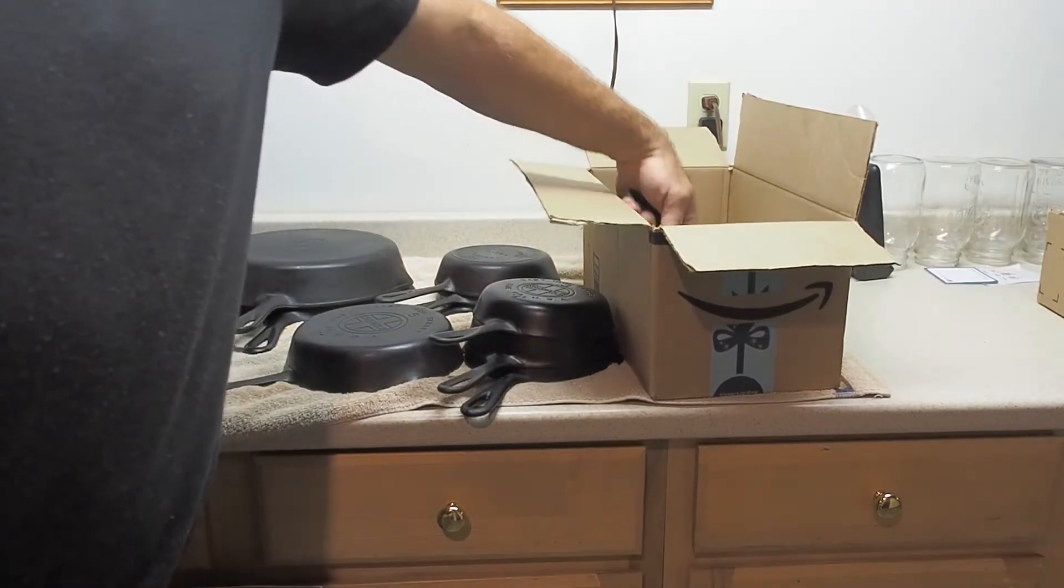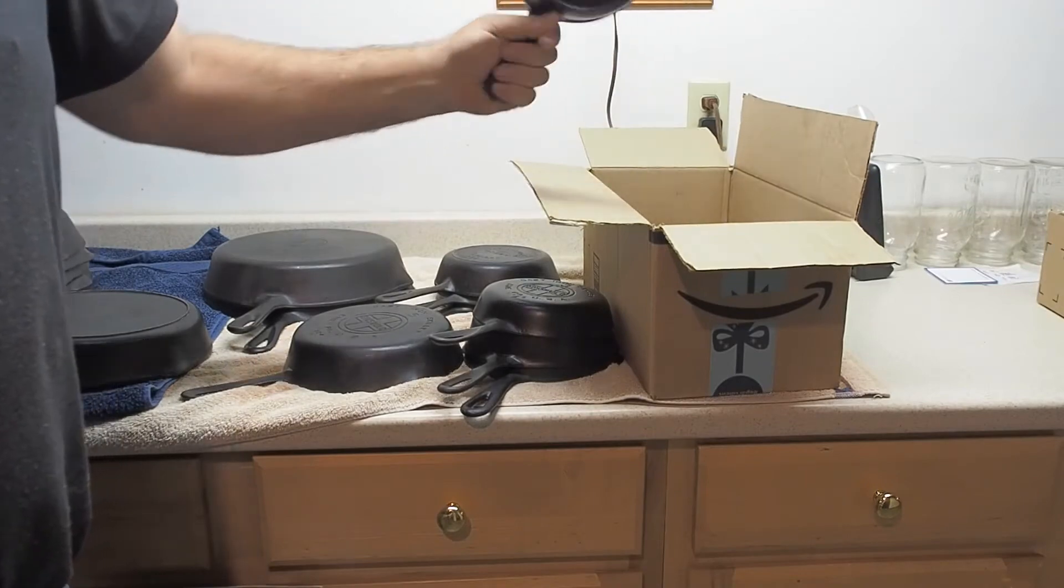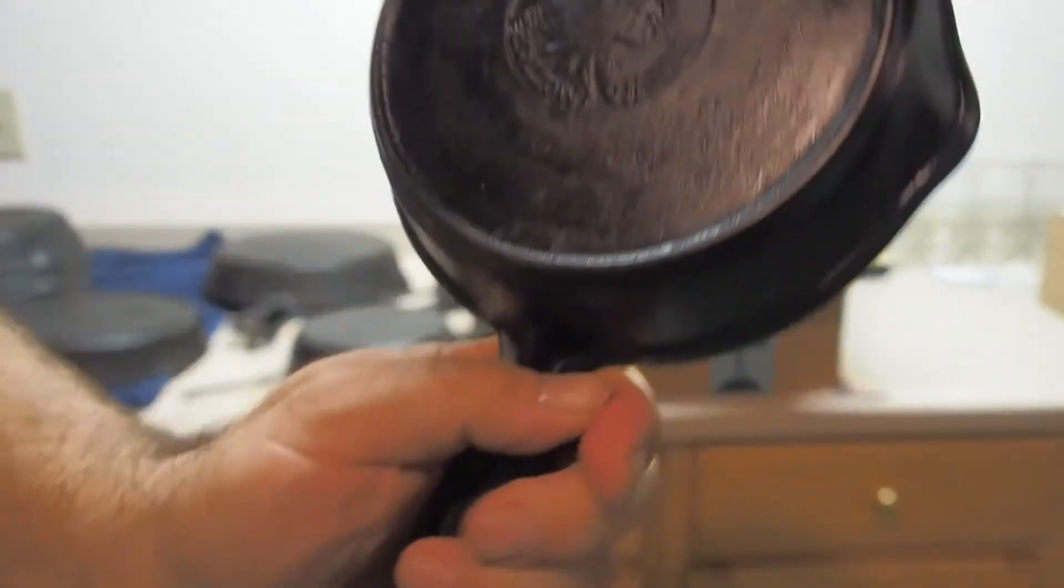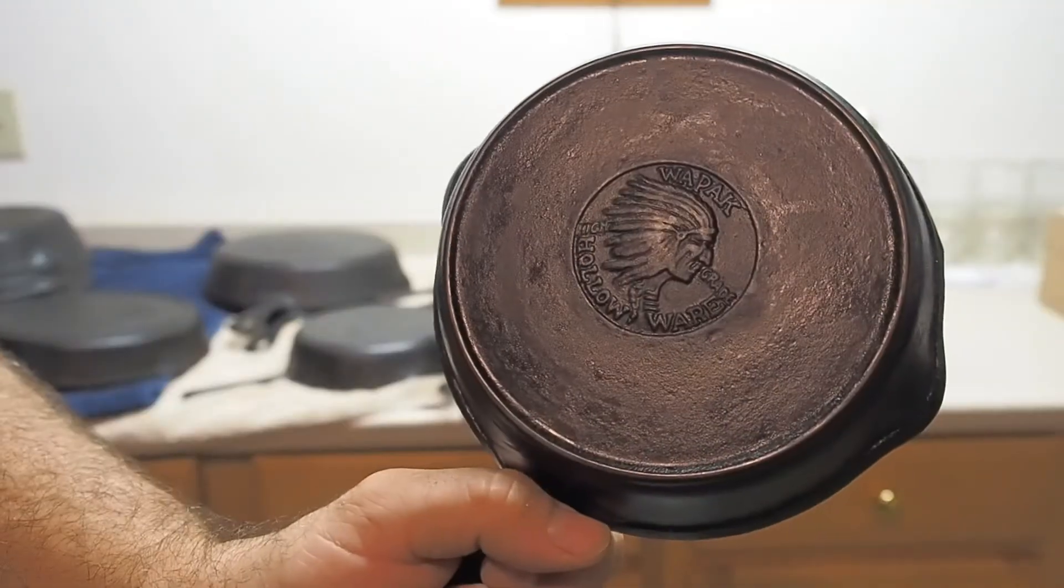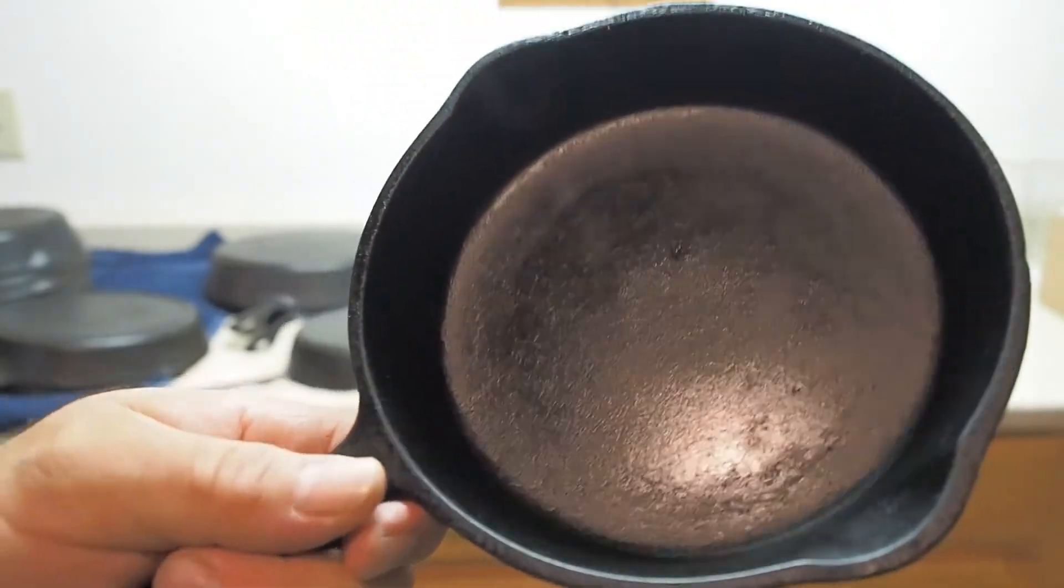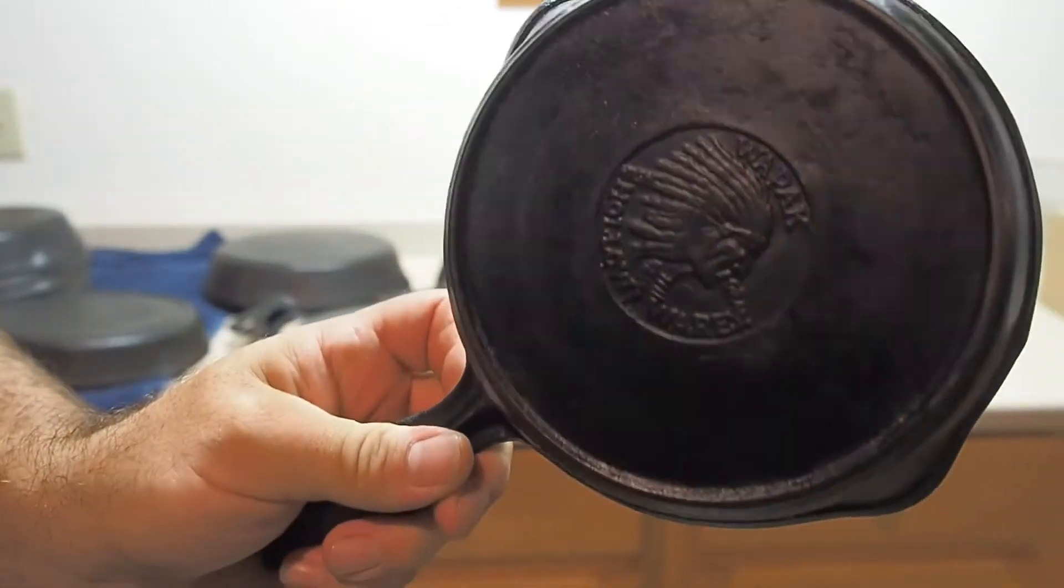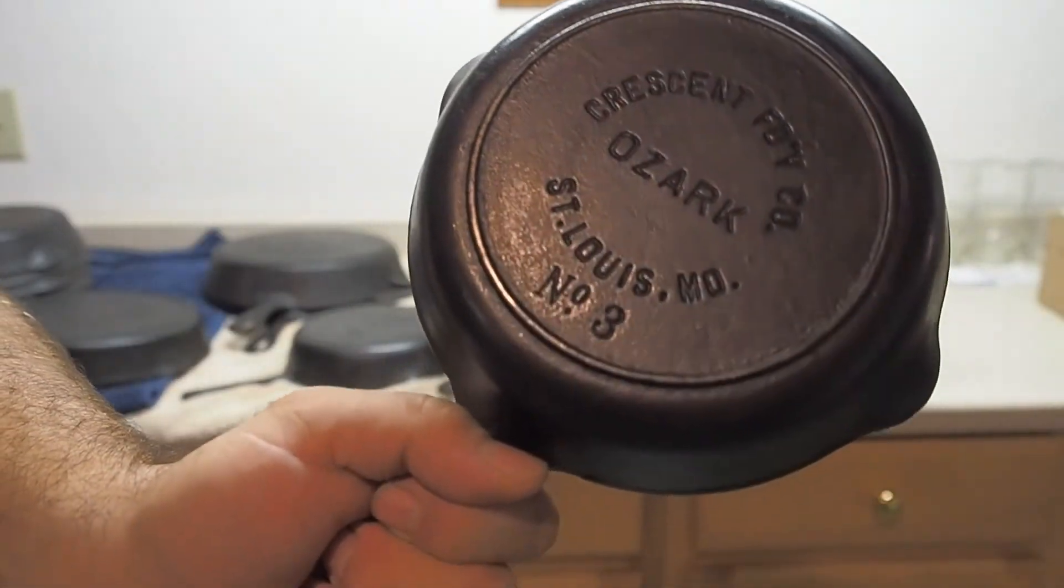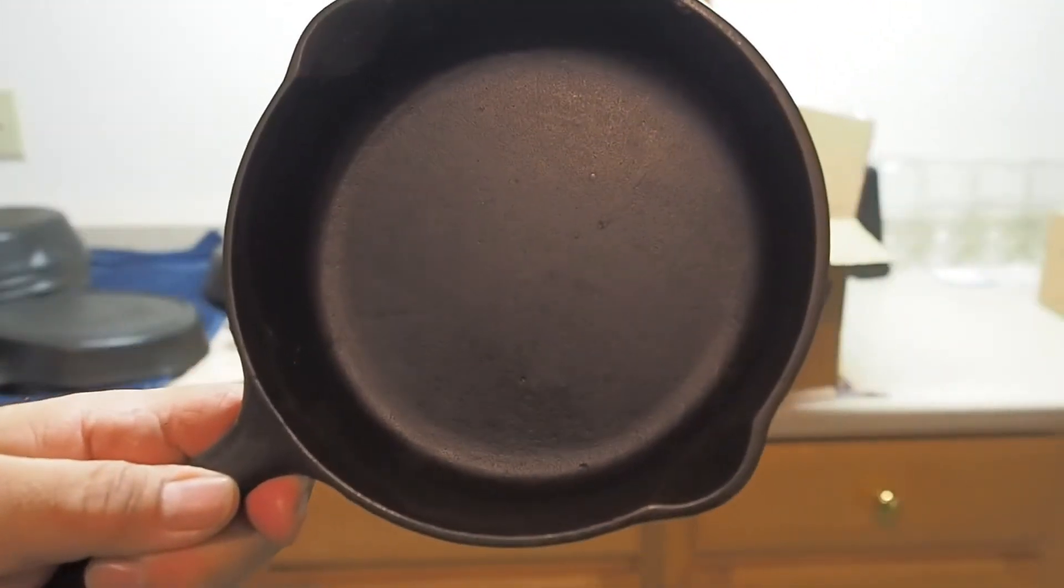Here's a neat piece. Number three, Wapak Indian Head logo. And it's not the reproduction. It's the real thing. It's got a nice baked on seasoning in there. It was used a lot. And here's another Ozark number three. And this thing looks like it's never even been used. Maybe it hasn't.